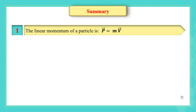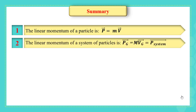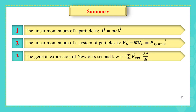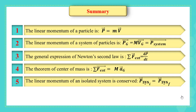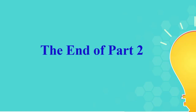To sum up: the linear momentum is given by p equals mass times v; for a system, pg equals m times vg. The general expression of Newton's second law is the sum of external forces equals dp vector by dt. The theorem of the center of mass is the sum of external forces equals m times a vector g. Finally, the linear momentum of an isolated system is conserved: p vector initial equals p vector final. This is the end of the second part of this lesson — please take notes and study them.